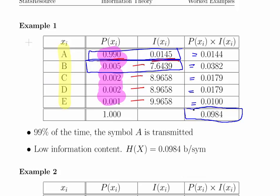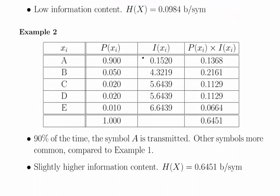In this case the entropy is 0.0984 bits per symbol. So 99% of the time symbol A is transmitted. There's not a lot of entropy, not a lot of information really being sent across. It's just periodically we will get the other four symbols but most of the time it's A.